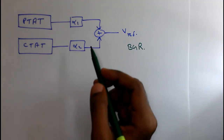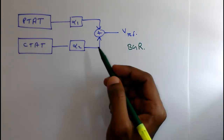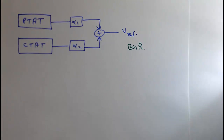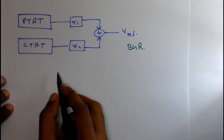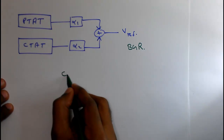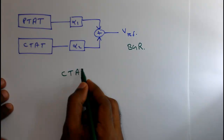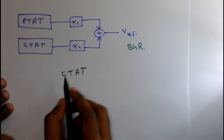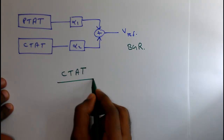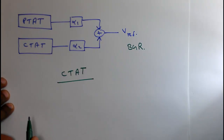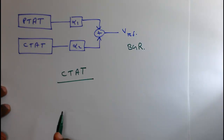We will implement this in a circuit. For that, first we will make the CTAT circuit, and we will explain the properties of the CTAT first. So this is the block diagram of the CTAT circuit.